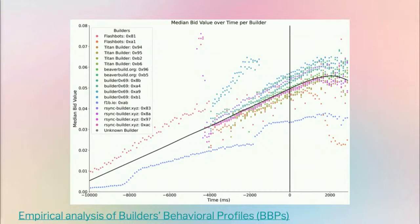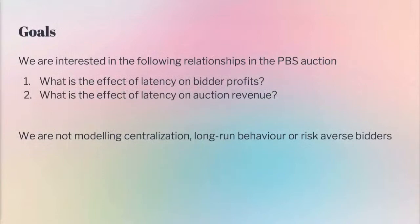We're trying to move from this very messy data — nicely formulated by Tomat from our research group — to a more theoretical model, to understand PBS also for the long run: what happens if this messy data gets more efficient, and we need to extrapolate to a long-term future. We're interested in the relationships in this PBS auction where people don't only compete on price but also on latency — what's the effect of latency on bidders' profits, where bidders will be builders, and what's the effect on auction revenue for proposers. We're not modeling centralization, long-run behavior around latency investment choices, or risk-averse bidders.